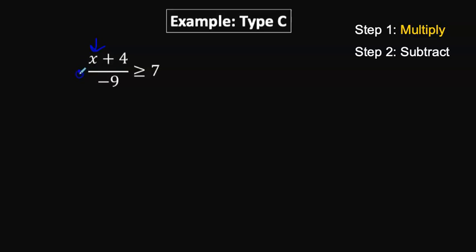First, we multiply each side by a number and we're going to multiply by negative 9 because the x is being divided by negative 9 and the opposite of division is multiplication.